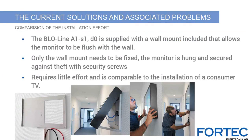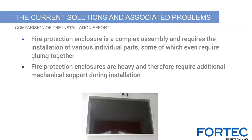The BLO line A1 S1 D0 is supplied with a wall mount included that allows the monitor to be flush with the wall. The wall mount only needs to be fixed, the monitor hung in, and secured against theft with security screws — requiring little effort, comparable to installing a consumer TV. With a fire protection enclosure, on the other hand, a large amount of work is required due to complex assembly and installation of various individual parts, some of which even have to be glued together, plus the much higher weight of the monitor-enclosure combination.